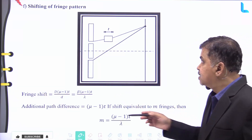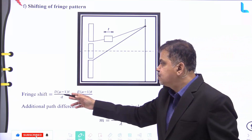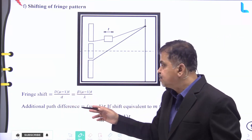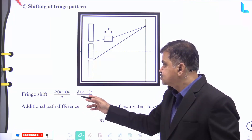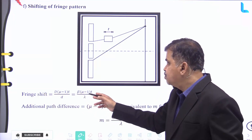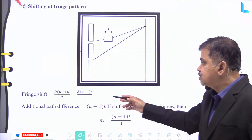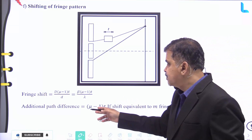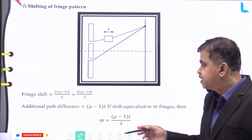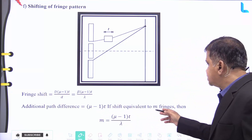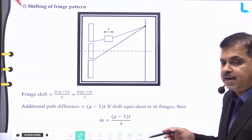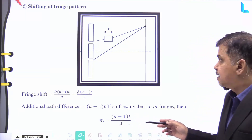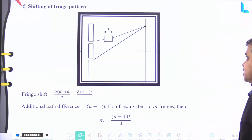For shifting of the fringe pattern, the fringe shift = D(μ − 1)t / d = β(μ − 1)t / λ. The additional path difference is (μ − 1)t. If the shift is equivalent to m fringes, then m = (μ − 1)t / λ for a double slit.